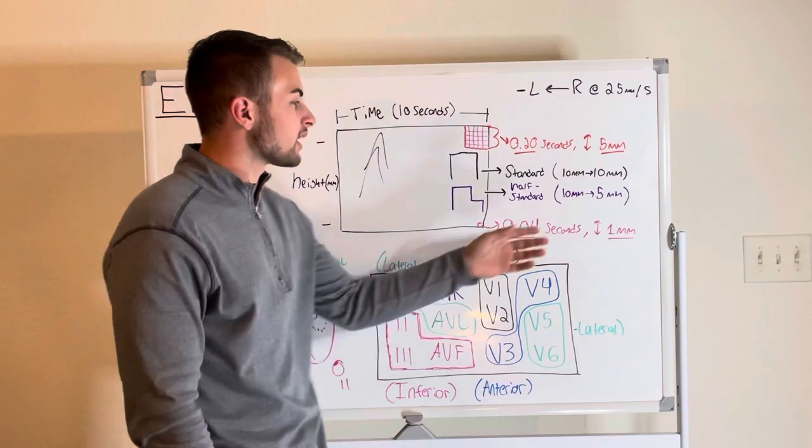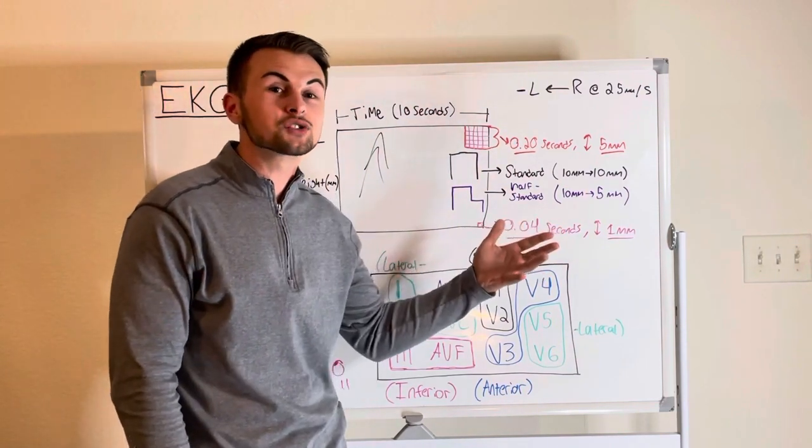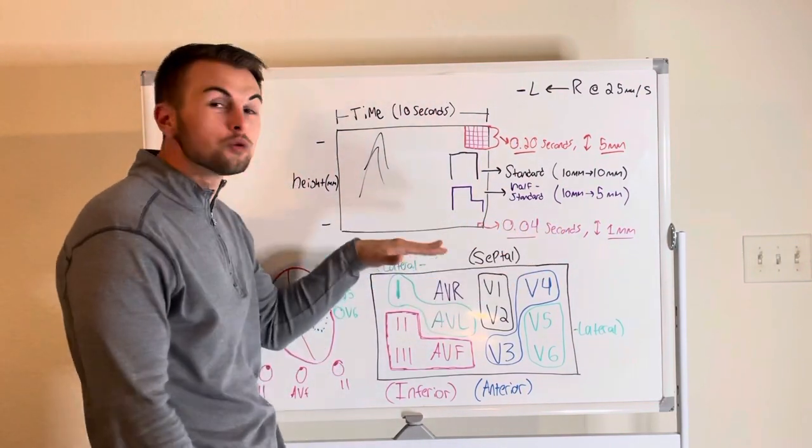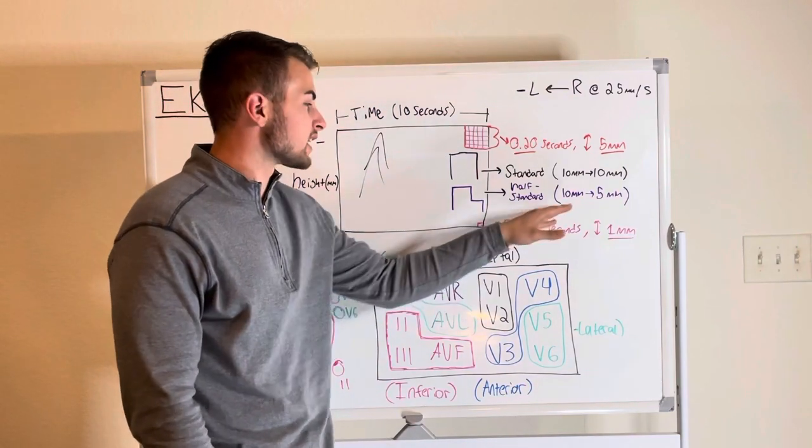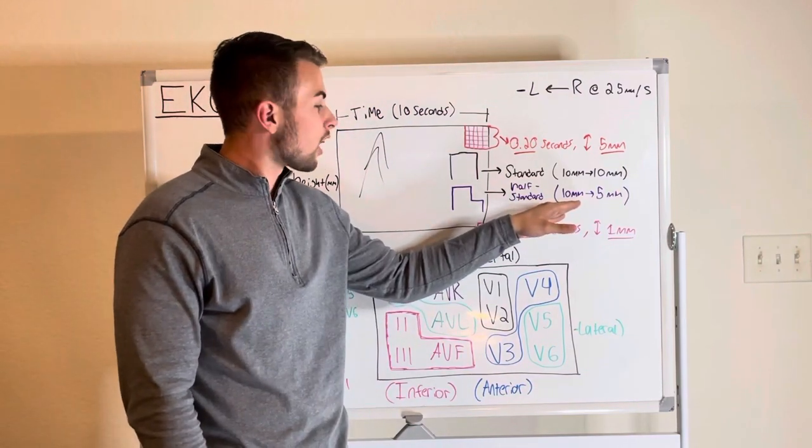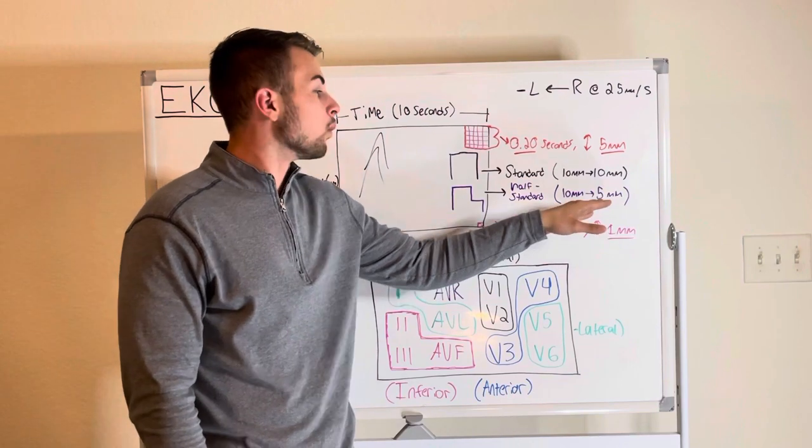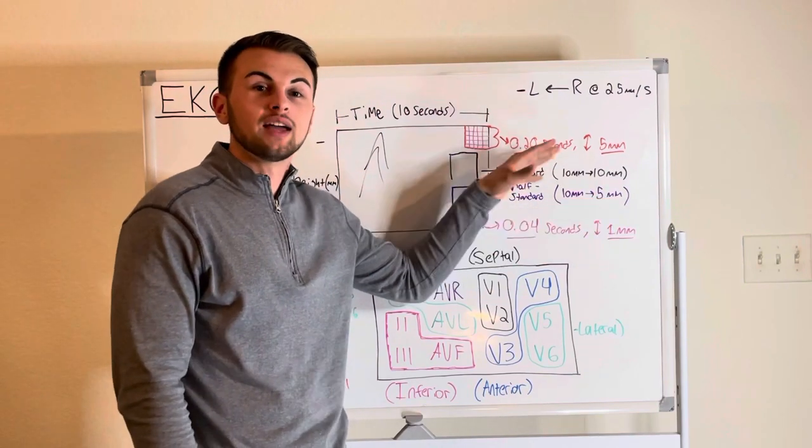Therefore a complex that is normally 4 millimeters tall will actually look 2 millimeters tall in half calibration or in this case a complex that is 10 millimeters tall will look 5 millimeters tall in half calibration.